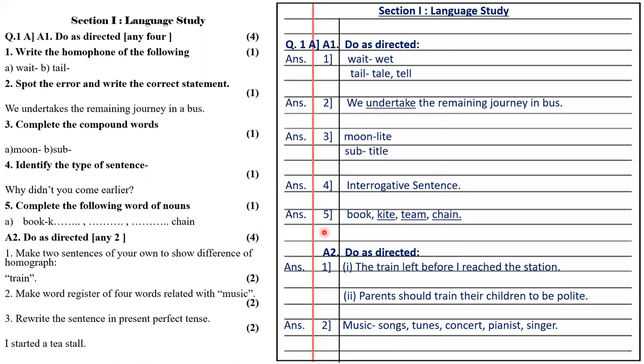Question number five is complete the following word chain of nouns. Book is given. So book, kite, team, chain.